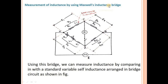In today's lecture we are going to discuss the measurement of inductance by Maxwell's inductance bridge. In the circuit, Z1 is the first arm, Z2 consists of R2 and small r2, Z3 is a pure resistance R3, and Z4 is connected with resistance R4.